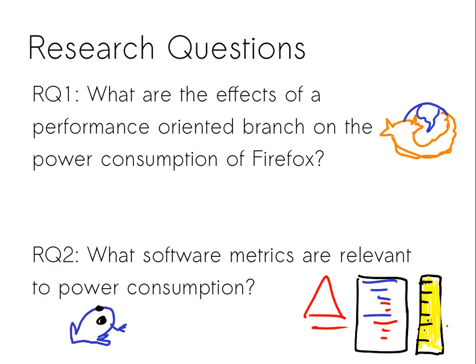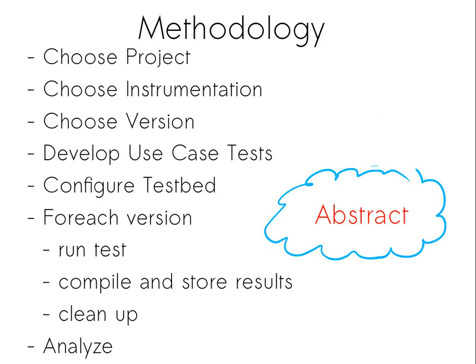We have two main research questions. First: what are the effects of a performance-oriented branch on the power consumption of Firefox? This is important because if you try to improve performance, you don't necessarily improve power performance. If you use more CPU and more events to get a faster system, you might use more power. So when Firefox made a performance-oriented branch, did they save power? Second, with Vuze, we look at what software metrics are relevant to power consumption based on what we measure.